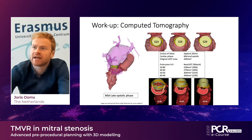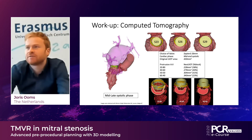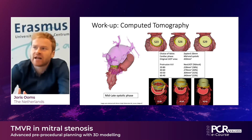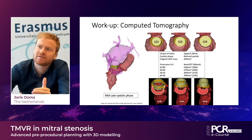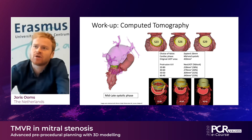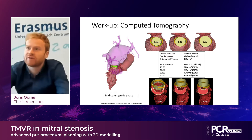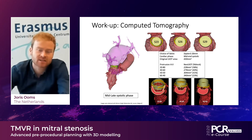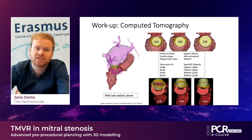First, we want to make sure we select the right valve. The top row shows different virtual SAPIEN valves implanted, ranging from a 23 to a 29. You can immediately see that the 29 is too big for the ring. On the left side, the S23 shows holes on either side, indicating a great risk of at least moderate paravalvular leak and embolization of the valve. With that, we decided the SAPIEN 26 mm was the best choice, and we could then perform additional analysis of implantation depth and compute the resulting NEO-LVOT.